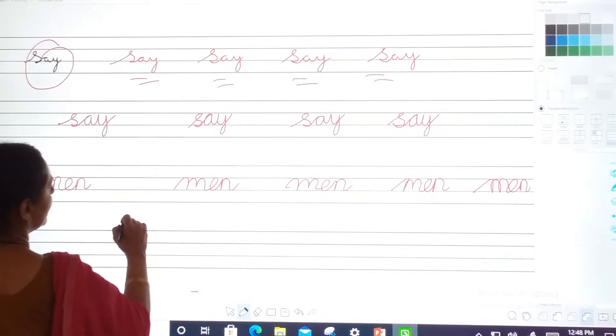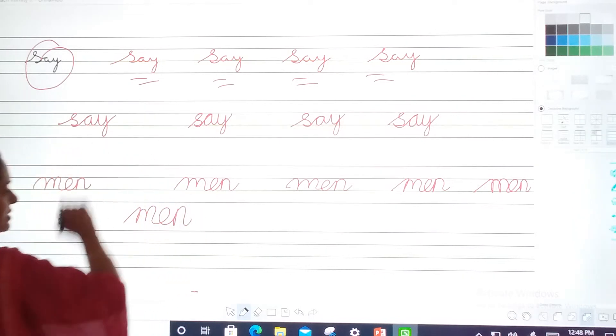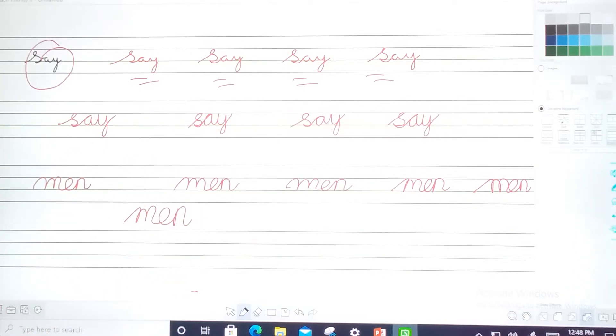Kaise likhna hai? Aise kia? Aise kia phir? Pencil ko chhodna nahi hai. Okay? Now we move to the another page. That is page number six.